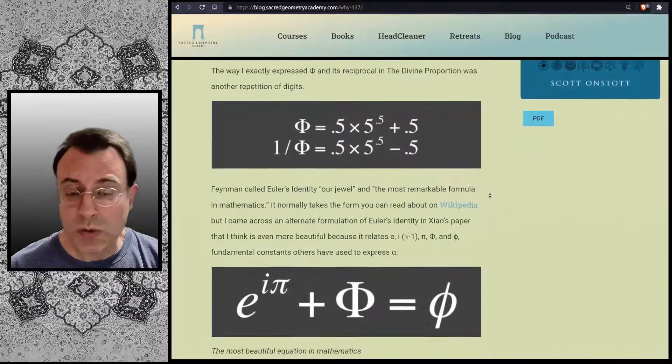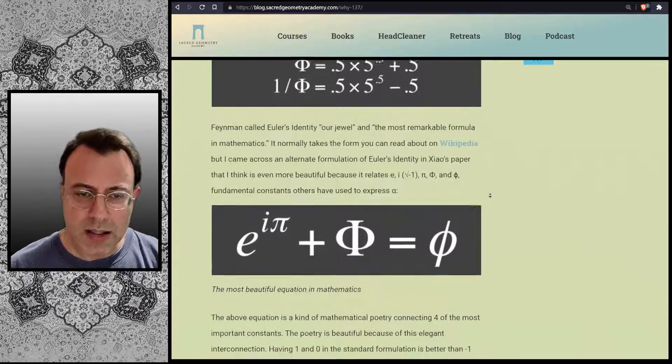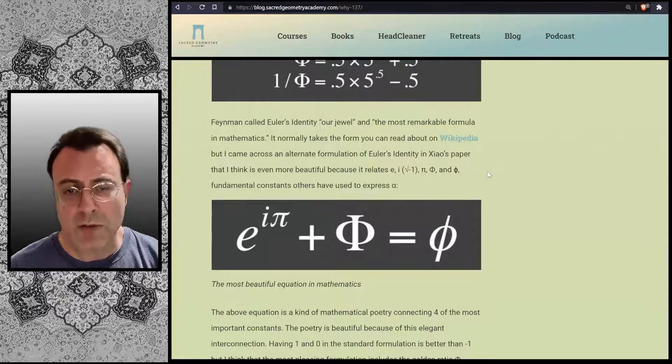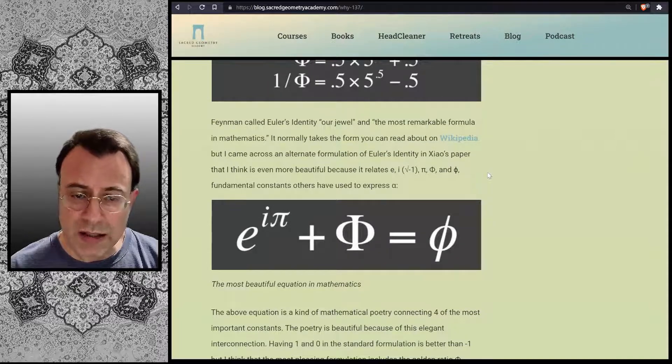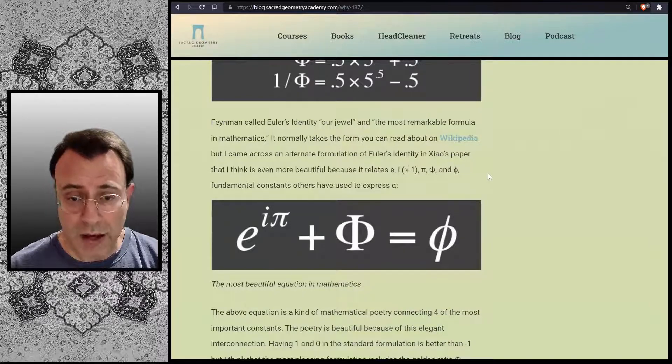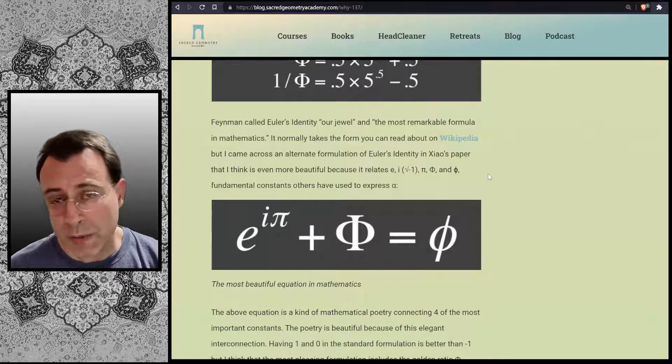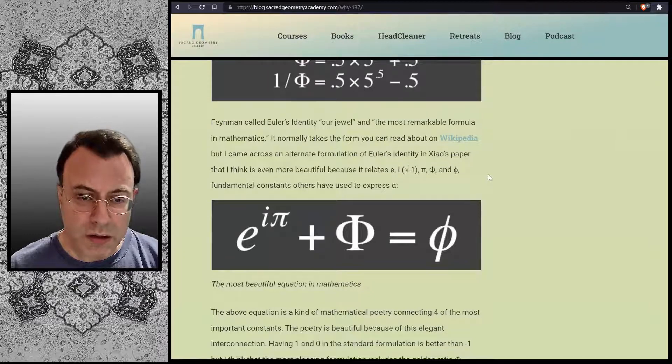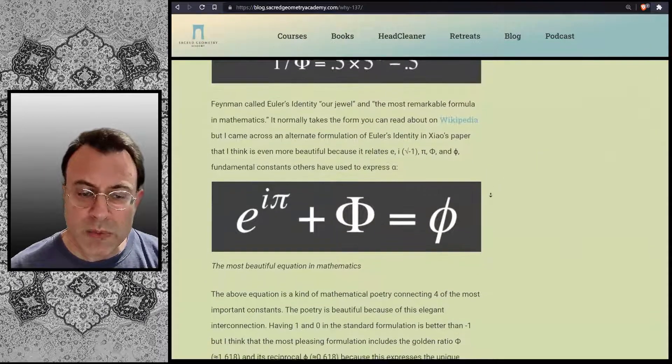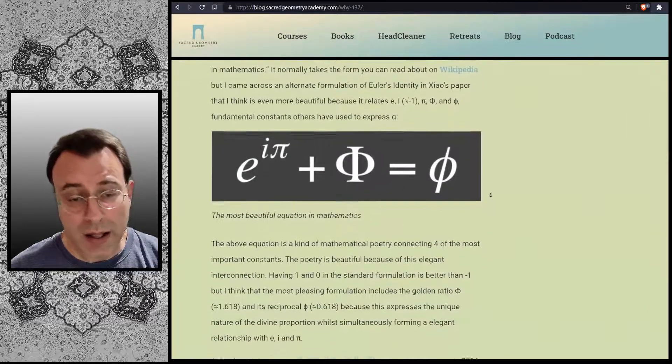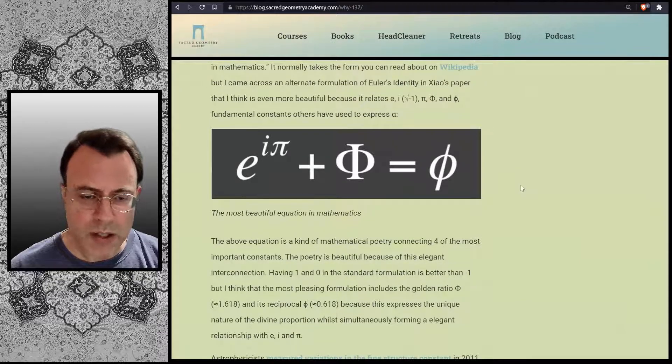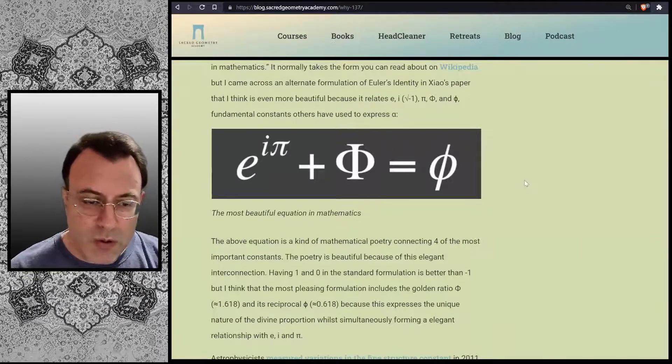Feynman called Euler's identity our jewel and the most remarkable formula in mathematics. It normally takes the form you can read about on Wikipedia, but I came across an alternative formulation of Euler's identity in Zhao's paper. And I think it is even more beautiful because it relates E, i, which is the square root of negative 1, pi, phi, and lowercase phi, which is the reciprocal of phi. All fundamental constants others have used to express alpha. So what I'm calling the most beautiful equation of mathematics is E raised to the power of i pi plus phi equals lowercase phi, or 1 over phi.